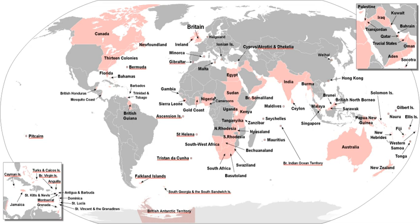The Historical Flags of the British Empire and the Overseas Territories refers to the various flags that were used across the various dominions, crown colonies, protectorates, and territories which made up the British Empire and current Overseas Territories.